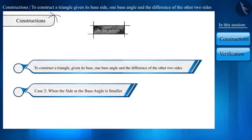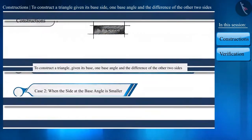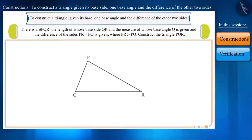In this session, we will understand the construction of a triangle according to Case 2. Let's again see what is Case 2. Suppose we have a triangle PQR where the length of the base side QR and the measure of the base angle Q is given, and the difference of the sides PR minus PQ is given where PR is greater than PQ.